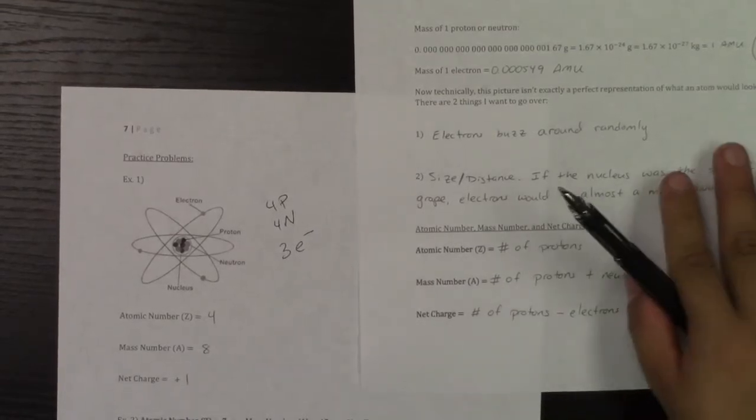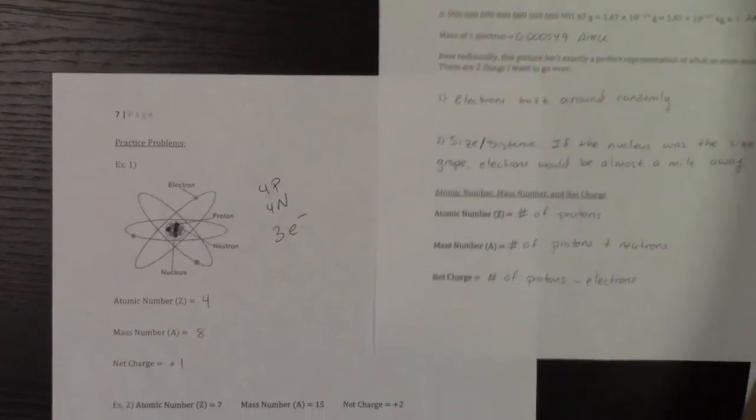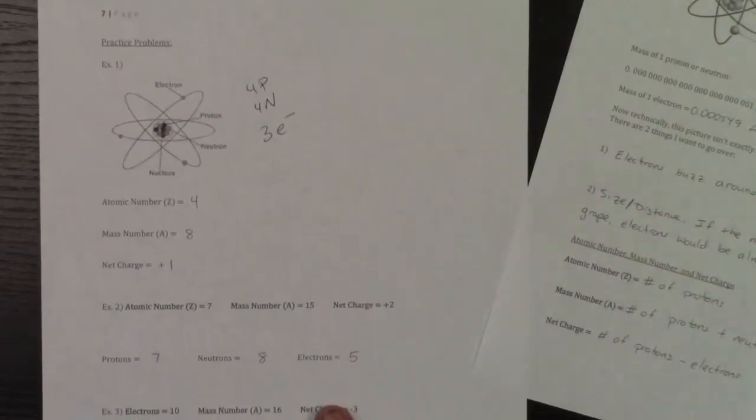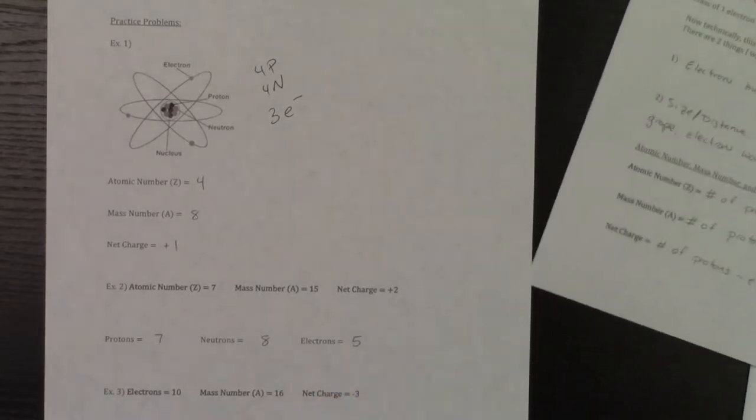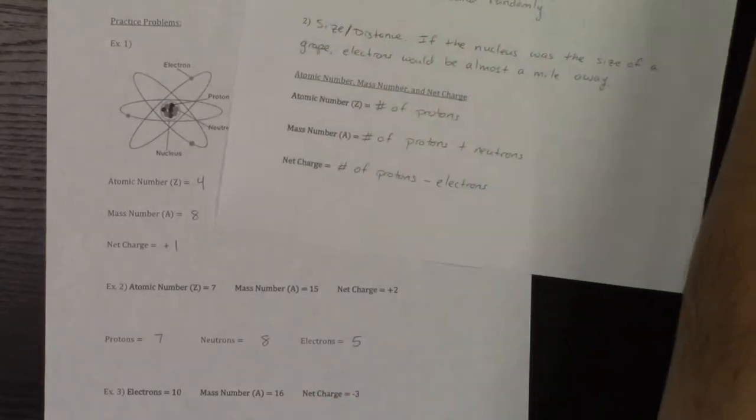Let's get a little bit trickier. What if instead I gave you the atomic number, mass number, and charge, and you have to find protons, neutrons, and electrons?